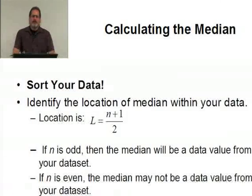How do we calculate the median? First of all, you have to sort your data. If you're going to do it by hand, the data must be sorted. If you're calculating the mean, who cares if it's sorted or not? First, we want to identify the location of the median within your data set. The formula for the location L is N, the sample size, plus 1 divided by 2.